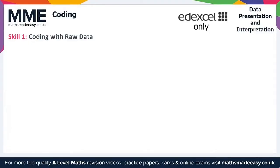Welcome to this Maths Made Easy mini video on coding. To start with, let's take a look at Skill 1, which is coding with raw data. To code a data point x, we turn it into y equals x minus a, all over b, where a and b are of our choosing. Then we can work with our new data set y to get information about our original x.